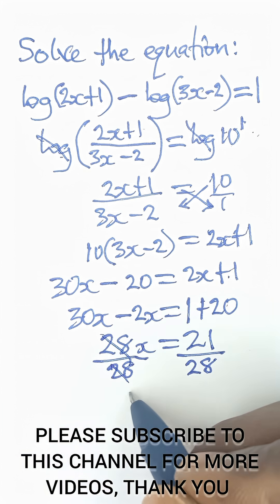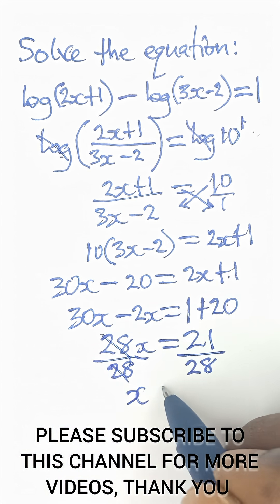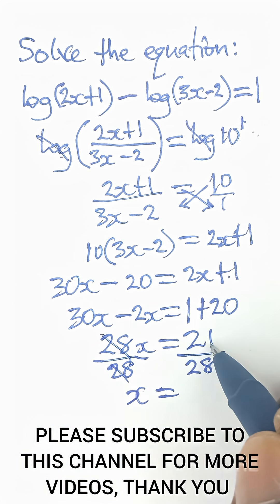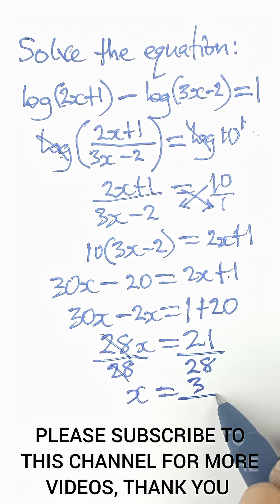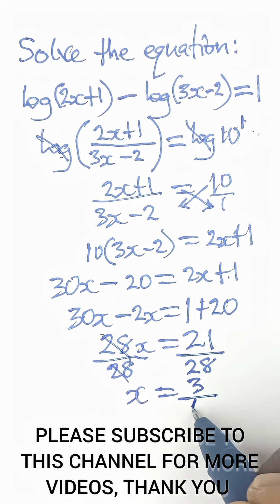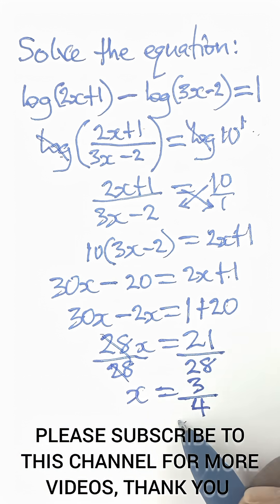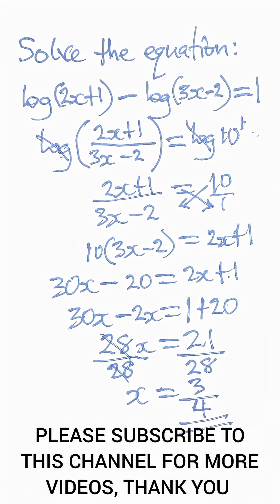So I have x left on this side, and that will be equal to 7 in 21 is 3, and 7 in 28 is 4. So the final answer is 3 over 4.